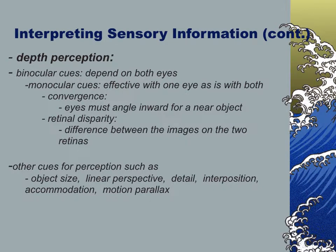Depth perception is definitely something that will be on your quiz. We have monocular and binocular cues, depending on whether we're using one or two eyes to figure out depth. Convergence uses both eyes, relying on the distance where the eyes have to converge to meet the object. If you hold your finger close to your face, it's converging very close and each eye sees something different. The further you take that finger away, the more both eyes see the same thing, and that tells your brain the object is far away. There's also object size, linear perspective, and other cues for how our eyes figure out depth.